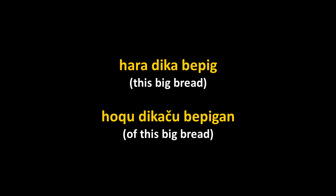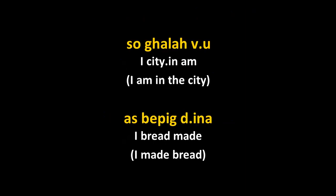This roku form is used for all oblique cases — ergative, genitive, dative, instrumental, anything. 'I am in the city': kala is 'city,' the final -h marks the locative case — 'in the city' is galach. So 'I am in the city' (said by a man) is so galach vuh.